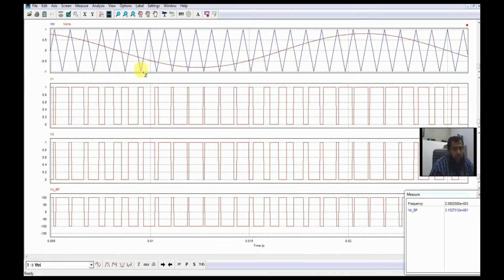You see here that this is exactly what we were expecting to see. We said earlier that when V_sine is greater than V_triangle, at this particular time you see that V1 is high and V2 is low.